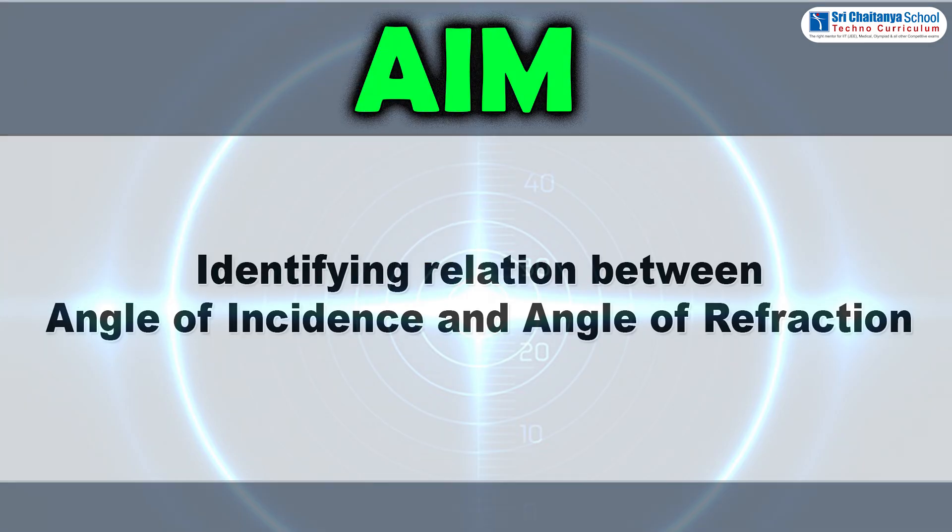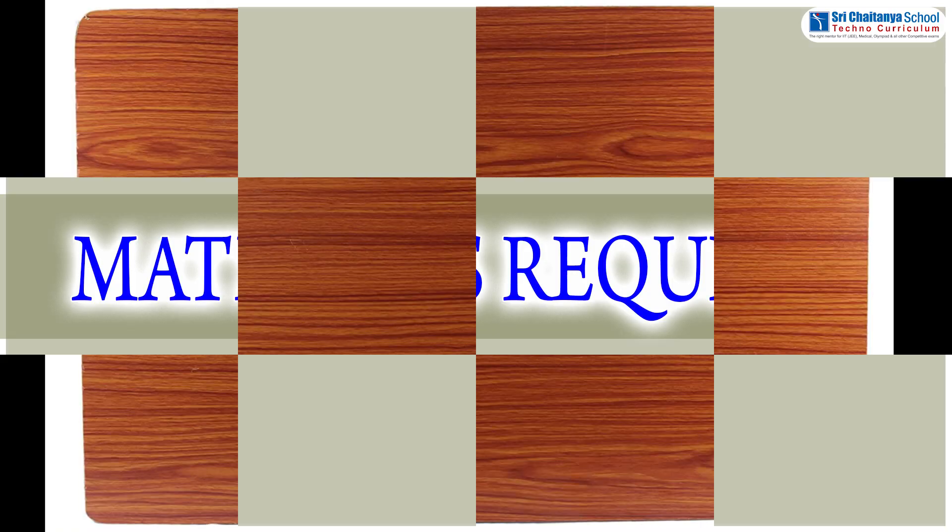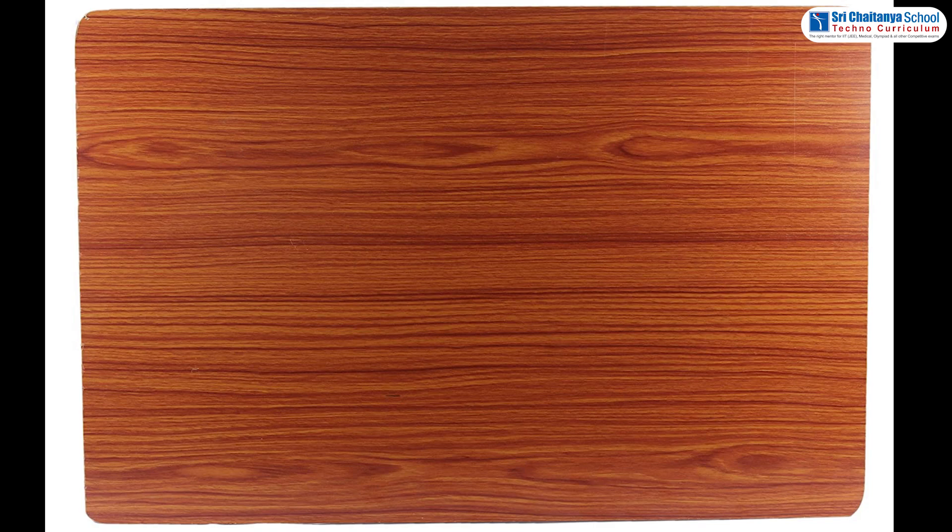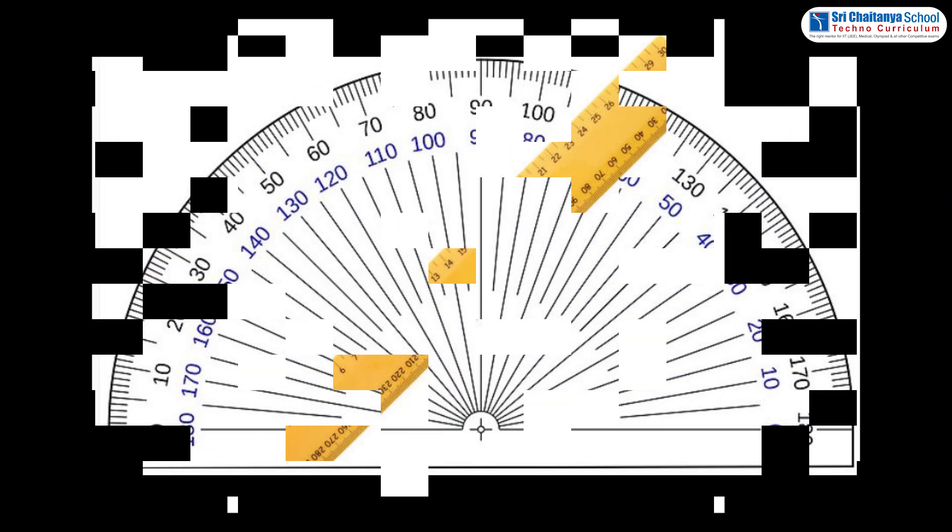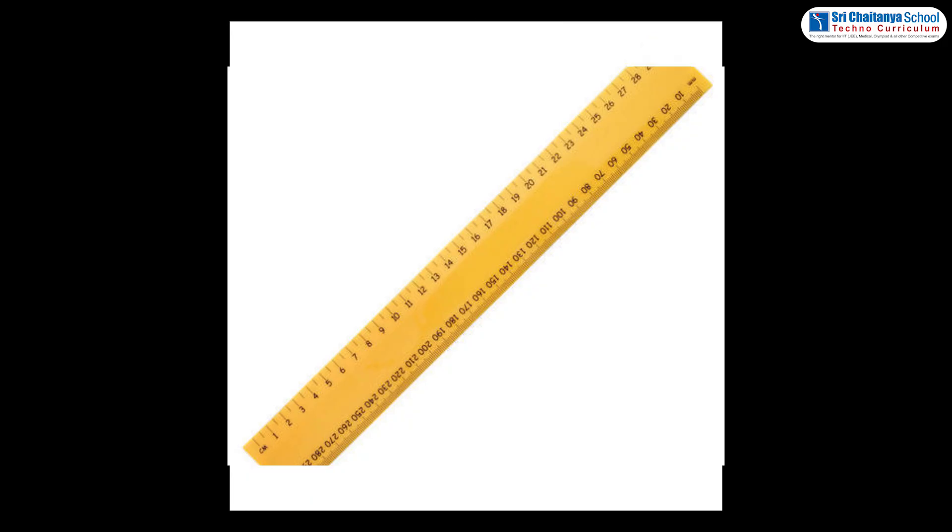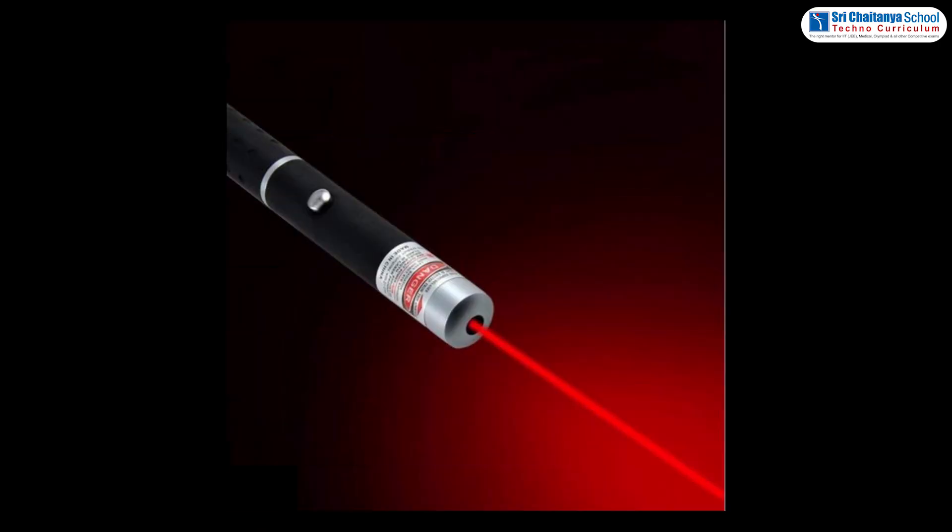The aim of this experiment is identifying relation between angle of incidence and angle of refraction. To conduct this experiment, the material required is a plank, white chart, protractor, scale, a semi-circular glass disc of thickness nearly 2 cm, pencil and laser light.